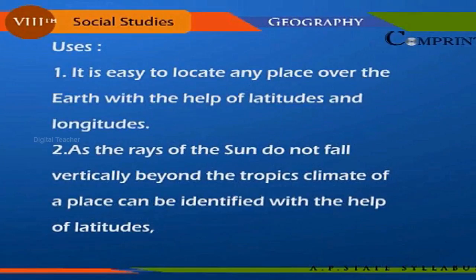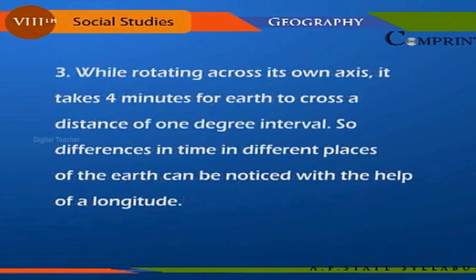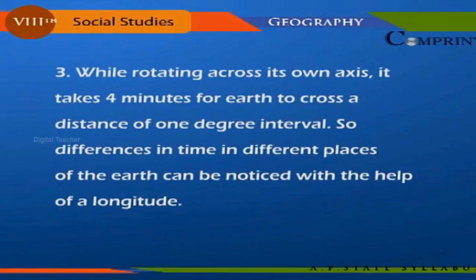Uses of latitudes and longitudes: first, it is easy to locate any place over the earth with the help of latitudes and longitudes. Second, as the rays of the sun do not fall vertically beyond the tropics, the climate of a place can be identified with the help of latitudes. Third, while rotating on its own axis, it takes four minutes for earth to cross a distance of one degree, so differences in time in different places of the earth can be determined with the help of longitude.